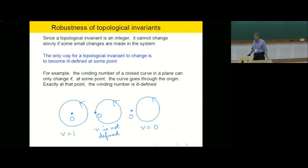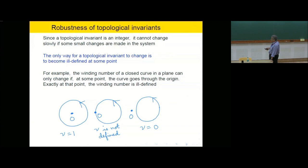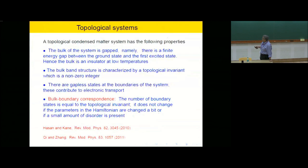Since the topological invariant is an integer — as was pointed out yesterday as well — it cannot change slowly if you make some small changes. It's an integer: 0, 1, 2, 3, et cetera. It cannot be 1.1. That's why it's an invariant under small changes. The only way for a topological invariant to change is if it becomes ill-defined at some point. For instance, here is a curve with winding number plus 1 around this origin. Then you move this curve, and at some point when the curve goes to the origin, suddenly the winding number is not defined. Then you move the curve a little bit more and the winding number has become 0.